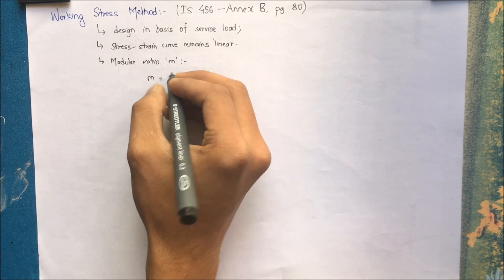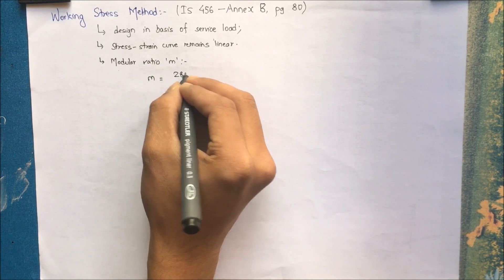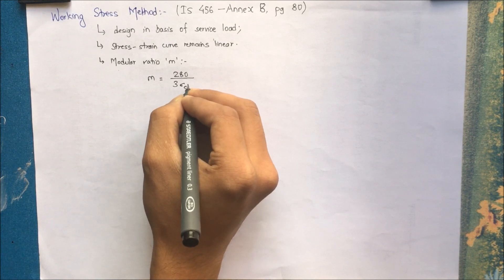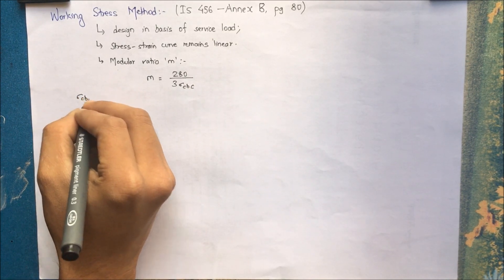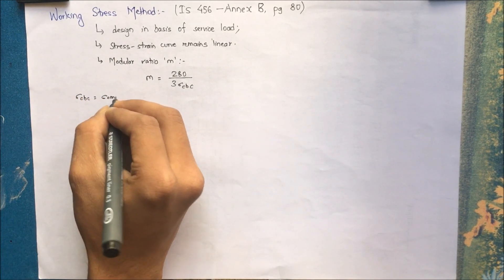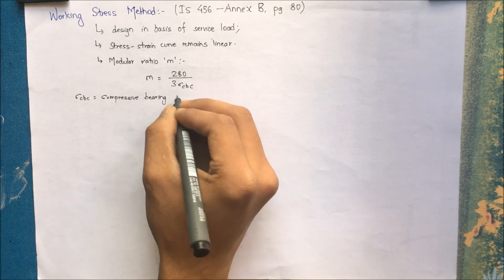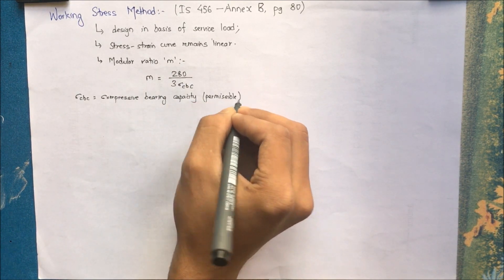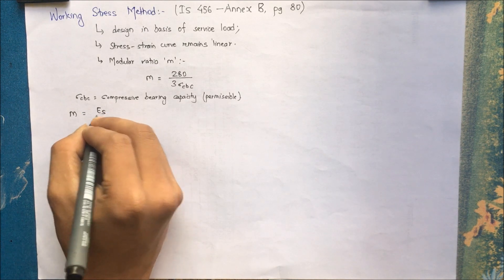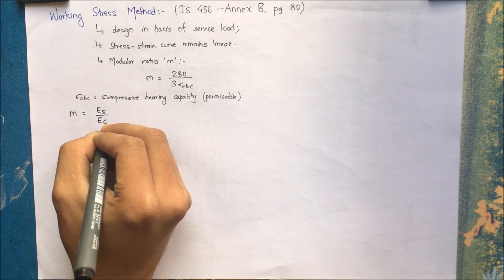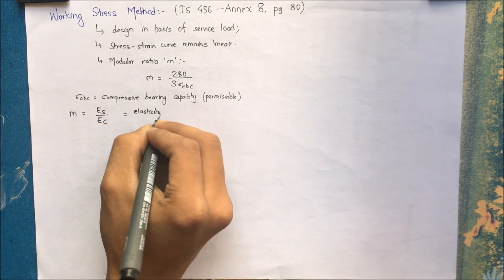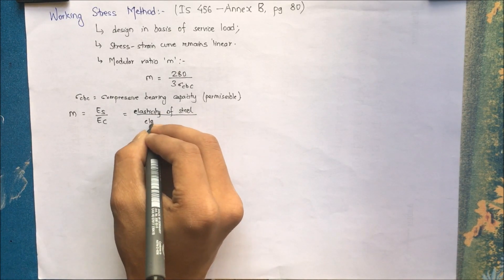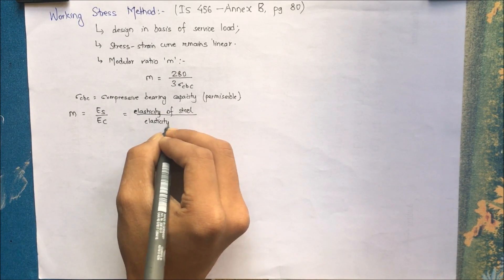M is equal to 280 divided by 3 times Sigma CBC, where Sigma CBC is the permissible compressive bearing capacity. M is also equal to ES divided by EC, that is the elasticity of steel divided by the elasticity of concrete.